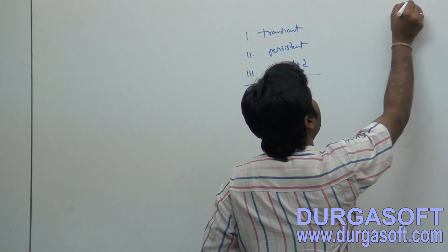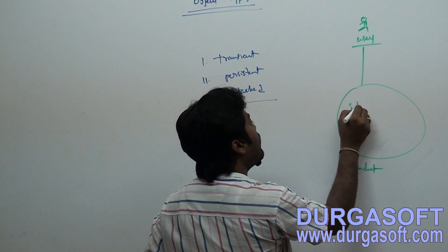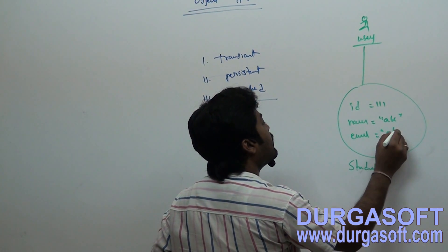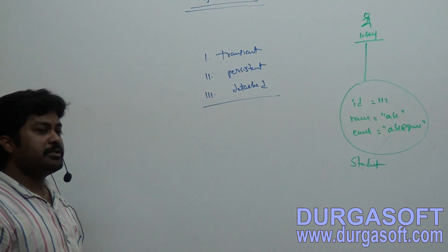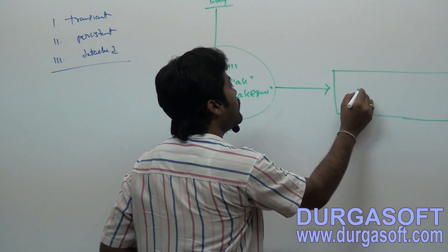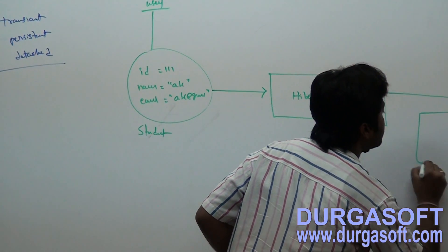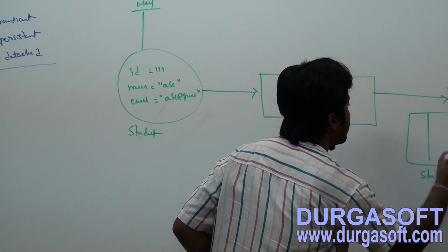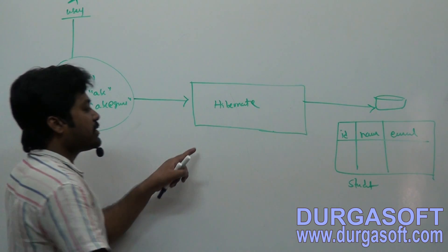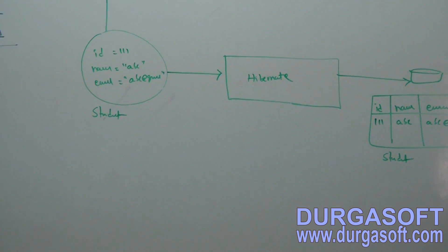If you pass data into an object — let's say if you have a student object with ID, name, and email — if you pass those values by creating the object, and then attach that object to Hibernate, Hibernate will store this data into the database table. In the student table it will store: ID, name, email — for example, 1, ABC, abc@gmail.com.